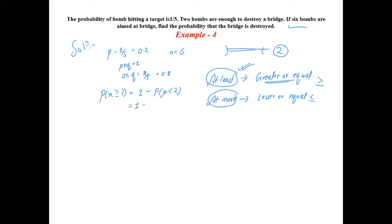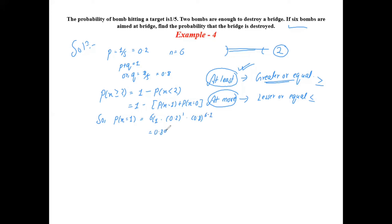One minus P(X < 2) means one minus the quantity P(X = 1) plus P(X = 0). Using the binomial formula nCx times p to the power x times q to the power n minus x: P(X = 1) equals 6C1 times 0.2 to the power one times 0.8 to the power five, which calculates to approximately 0.393.